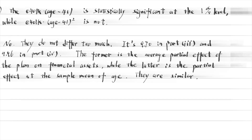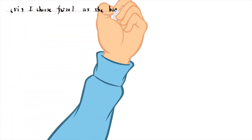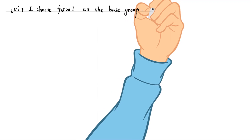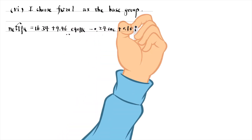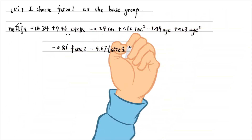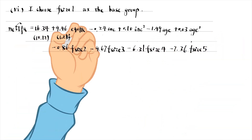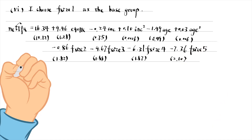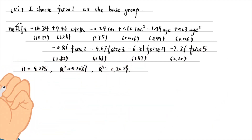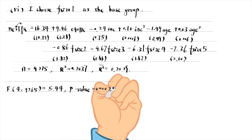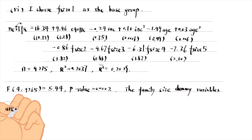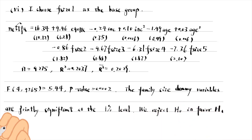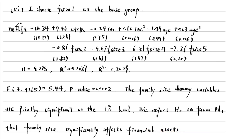For part 6, we generate 5 dummy variables first. Then we include 4 of them in the model to avoid the dummy variable trap. The estimated equation is as follows. We do the F-test for the significance of the family size dummy variables. The F-statistic is 5.44 and its p-value is 0.0002. The family size dummy variables are jointly significant at the 1% level.